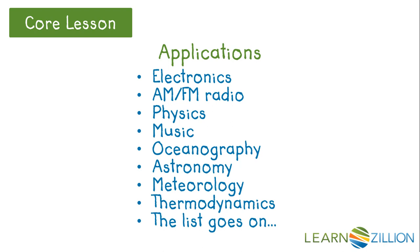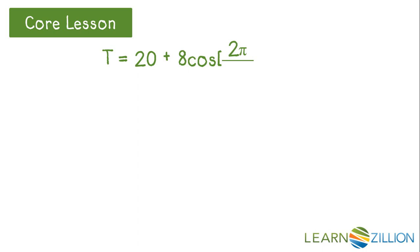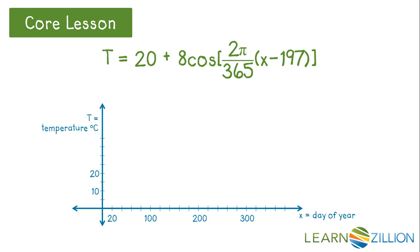The equation given in the opening question turns out to be a temperature model for New Orleans, and it can be used to predict the daily average Celsius temperature for any given day of the year. We'll graph this equation to show the average daily temperature over the course of a year, with January 1st being day 0, and December 31st, day 365.